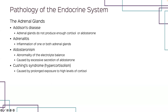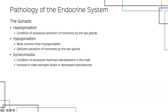For the adrenal glands, Addison's disease is where the adrenal glands do not produce enough cortisol or aldosterone. Inflammation of the adrenal glands is known as adrenalitis. Cushing's disease is caused by prolonged exposure to high levels of cortisol. Hypergonadism and hypogonadism involve excessive or deficient secretion of hormones by the sex glands. Gynecomastia is excessive mammary development in the male, due to an increase in male estrogen levels or a decrease in testosterone levels.